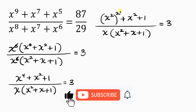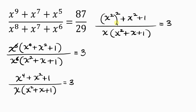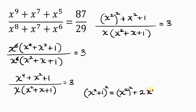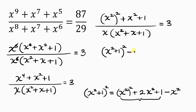This expression in the numerator is close to a perfect square. The perfect square I'm referring to is x squared plus 1, raised to the power of 2. When I expand this, I get x squared raised to the power of 2, plus 2x squared plus 1. The difference between this perfect square and the numerator is just negative x squared. So I can write the numerator as x squared plus 1, raised to the power of 2, minus x squared.